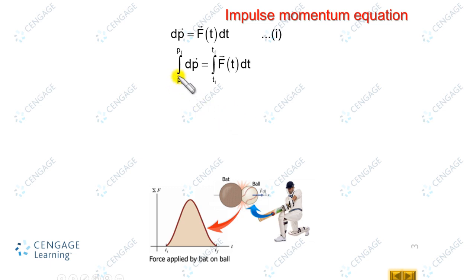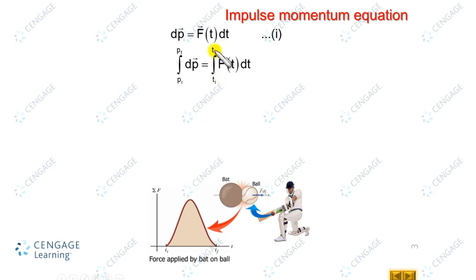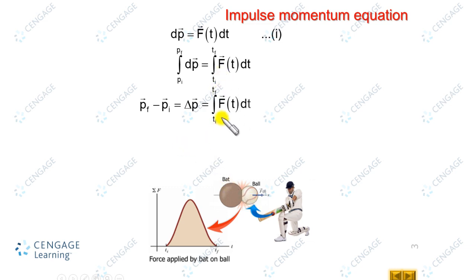The limits are from p-initial to p-final. p-initial is the initial linear momentum of the ball, and p-final is the final linear momentum of the ball. t-initial is when the ball and bat come into contact, and t-final is when contact is lost. We can rearrange this equation: p-final minus p-initial equals delta-p, and on the right-hand side we write the integral from t-initial to t-final of F(t) dt.